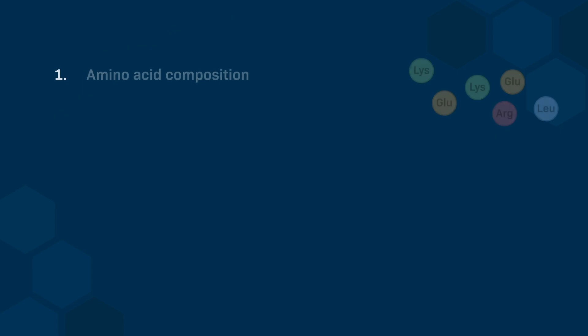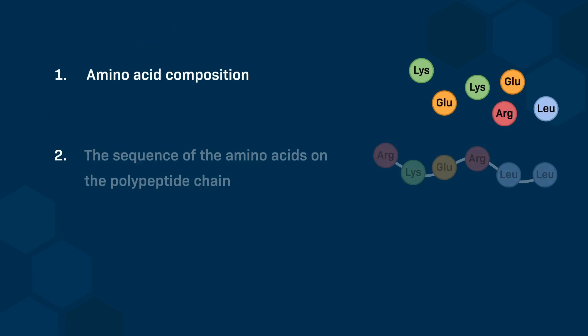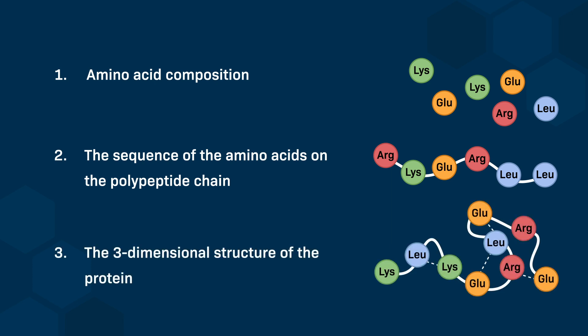Its amino acid composition, the sequence of amino acids along the polypeptide chain — which we call the primary structure of proteins — and the three-dimensional structure of the protein, which is determined by the primary structure.